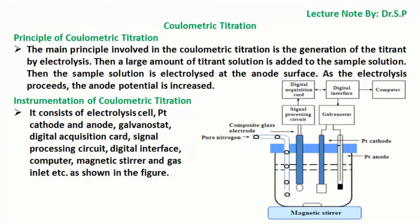Here, you can see pure nitrogen gas is passed into the solution, and the solution is stirred by a magnetic stirrer. The platinum cathode and anode are connected with the galvanostat. The composite glass electrode is connected with the signal processing circuit, which is further connected with the digital acquisition card, digital interface, and computer. This is the general setup of coulometric titration.